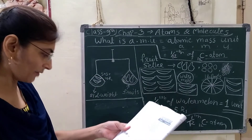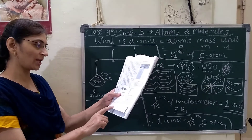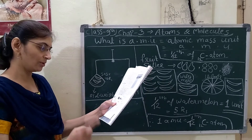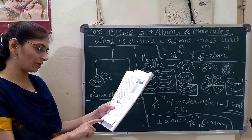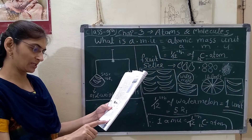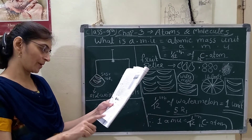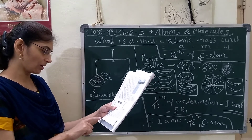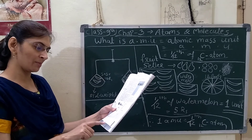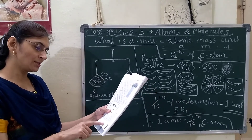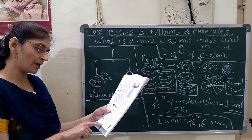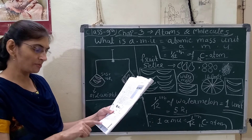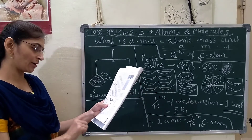Now the formal definition of atomic mass unit: a unit of mass used to express atomic and molecular mass, and it is equal to one twelfth of the mass of an atom of carbon-12. This is the definition of atomic mass unit.